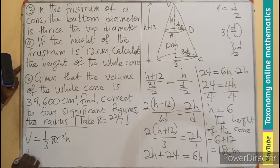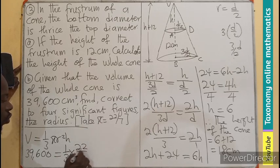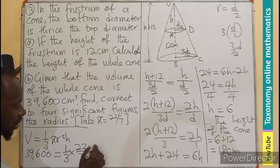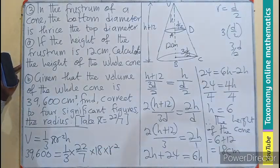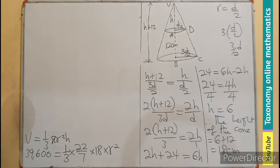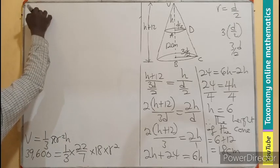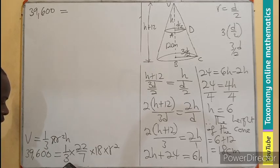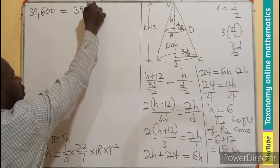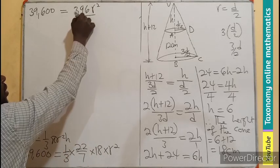By substitution, 39,600 equals 1 third times pi, 22 divided by 7, times the height 18, times r squared. We multiply the denominators: 1, 22, 18, r squared are the numerators. So I have 39,600 equals 22 times 18, that gives us 396 r squared, divided by 3 times 7, which is 21.